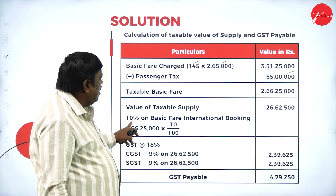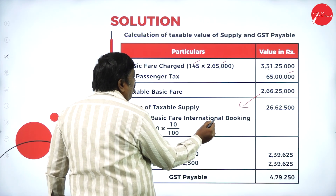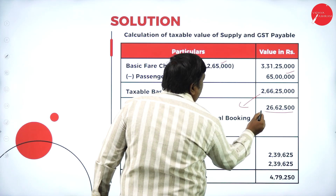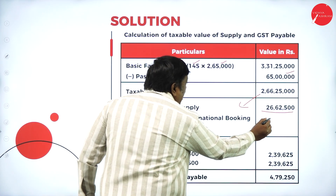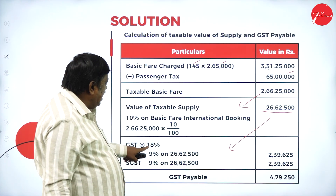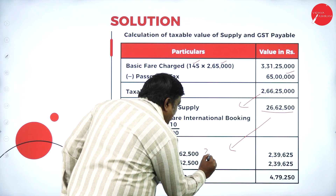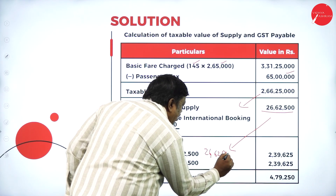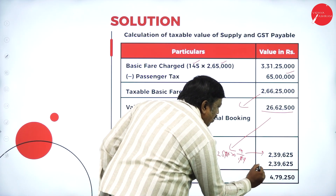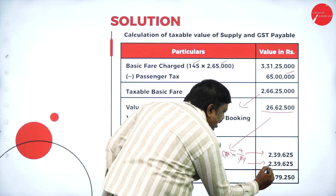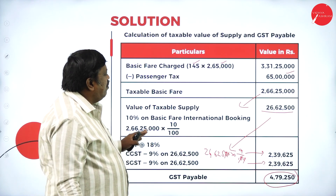Since it is an international booking (to Singapore), we apply 10 percent on basic fare. Taxable value = 10% of ₹2,66,25,000 = ₹26,62,500. On this taxable value, 18 percent GST is payable — 9 percent for central government and 9 percent for state government. ₹26,62,500 × 9% = ₹2,39,625 each. Total GST payable = ₹4,79,250.